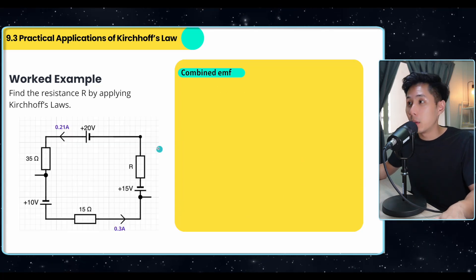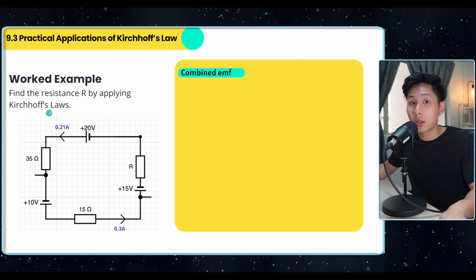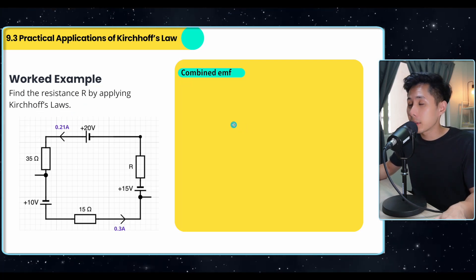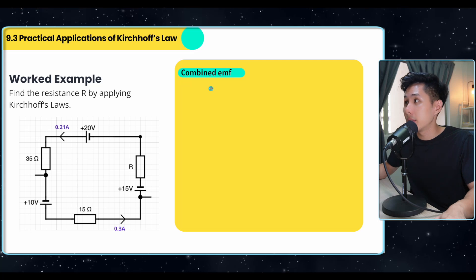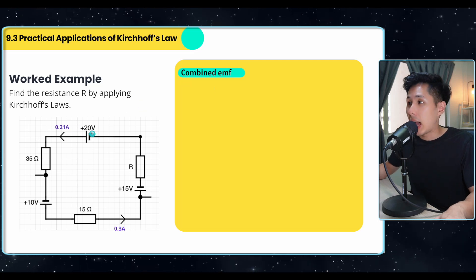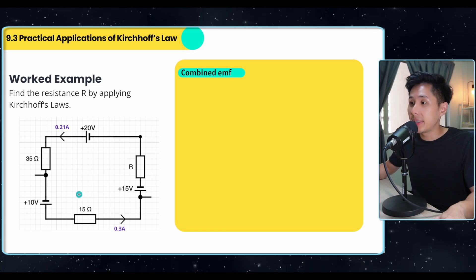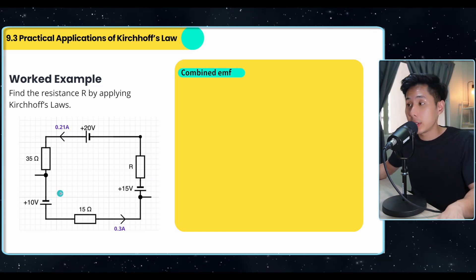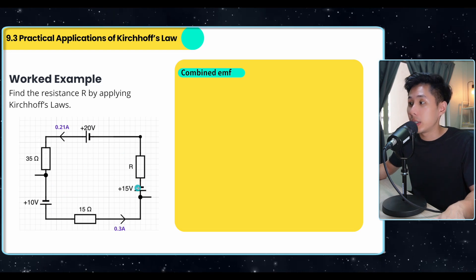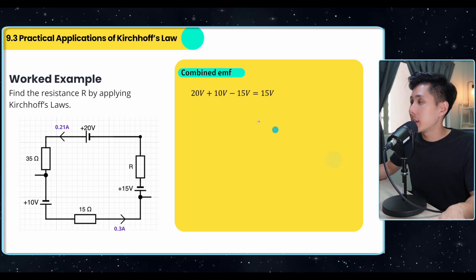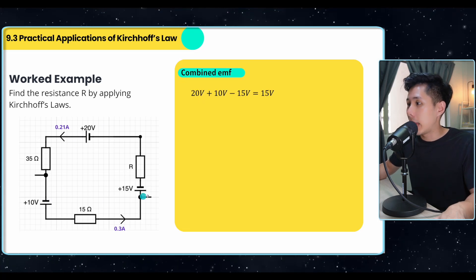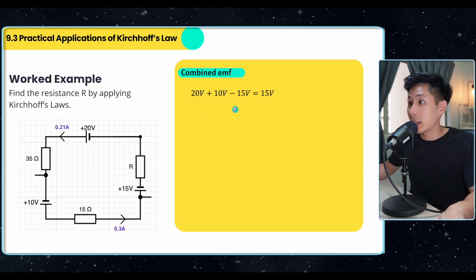So another work example to find the resistance R by applying Kirchhoff's law. So again, the first thing that I'm going to do is find out the combined EMF. I have three cells, one, two, and you can see that cell number one, cell number two, they are arranged in the same direction. Whereas this cell, they're arranged in the opposite direction. So what I'm going to do, add this two up and then minus 15 volt. And that's my combined EMF.